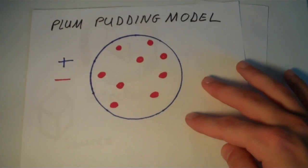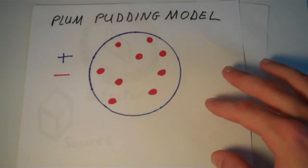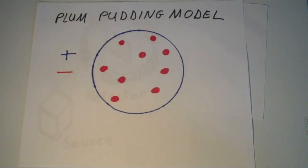So in the plum pudding model, what you have is these negatively charged electrons. That's what these little red dots are. And then these negatively charged electrons are suspended in a sphere of positive charge.